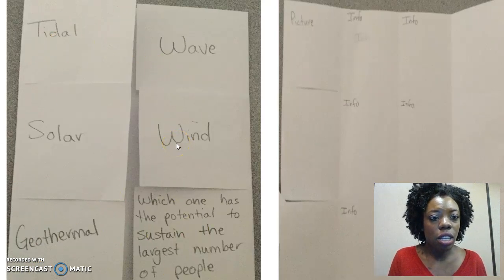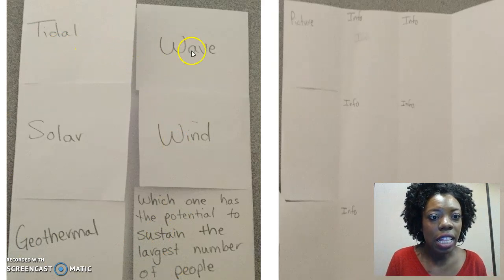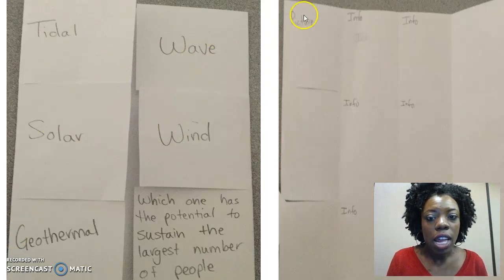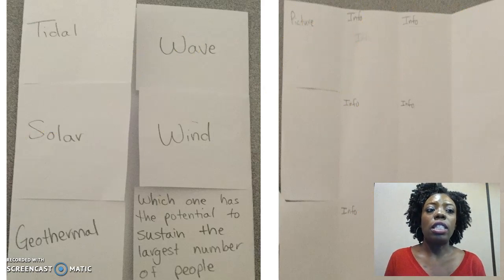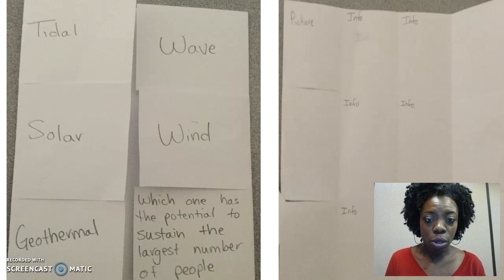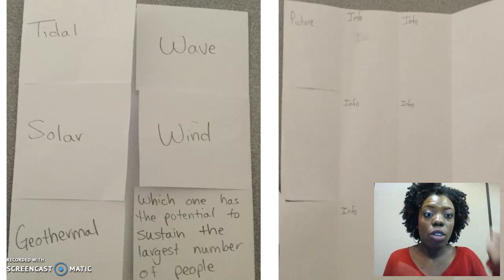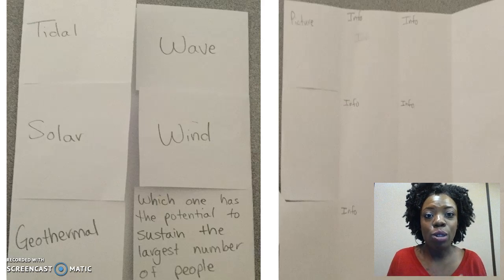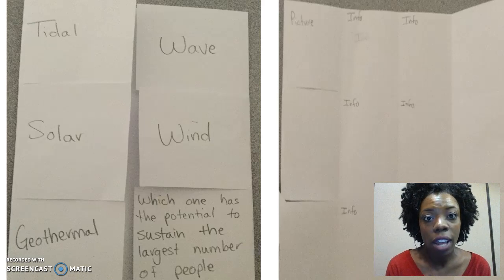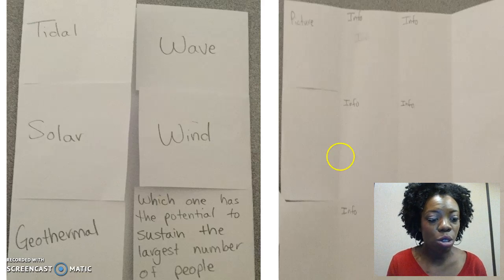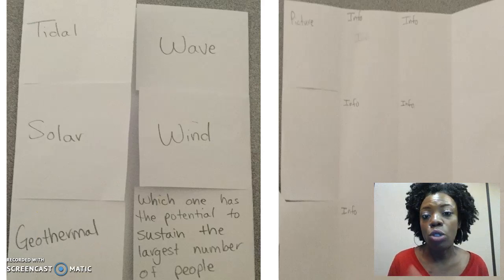It's got three flaps on each side, and the titles of each type of alternative energy source are on the front. The inside looks like this. So gather your materials, fold up and cut your foldable, and label it. Press pause in order to do that, and then when you finish creating your foldable and you're ready to take notes, press play again on the module.